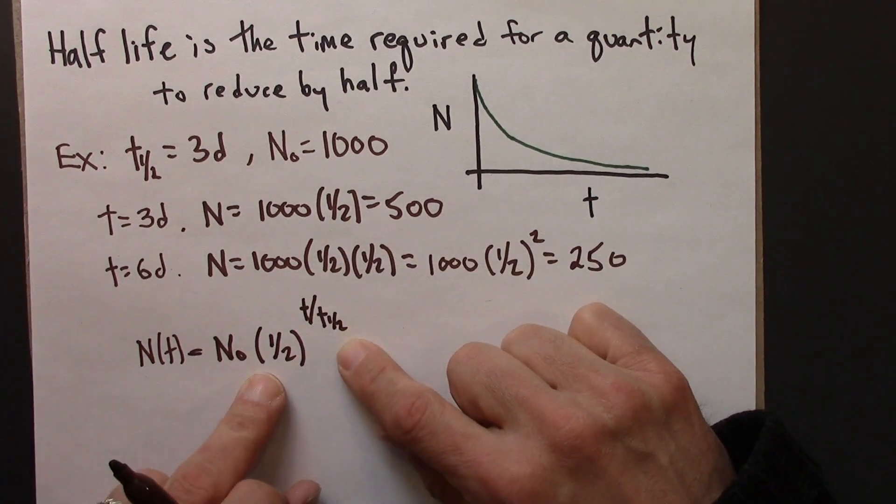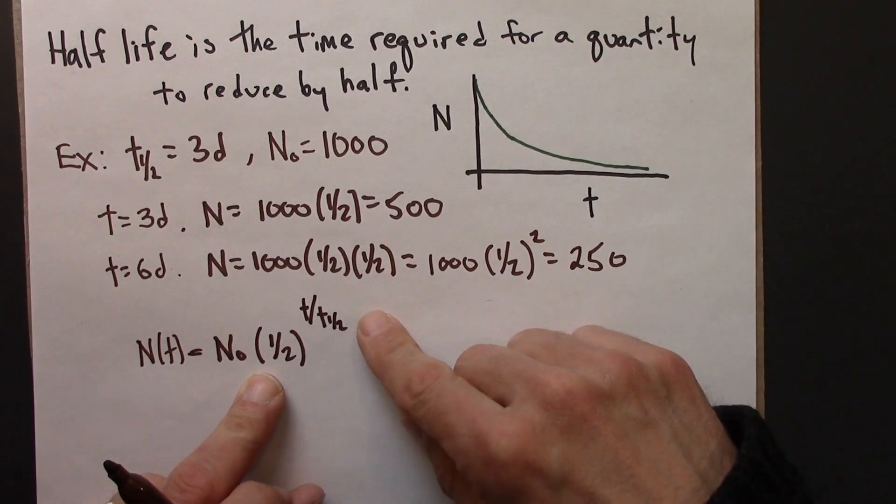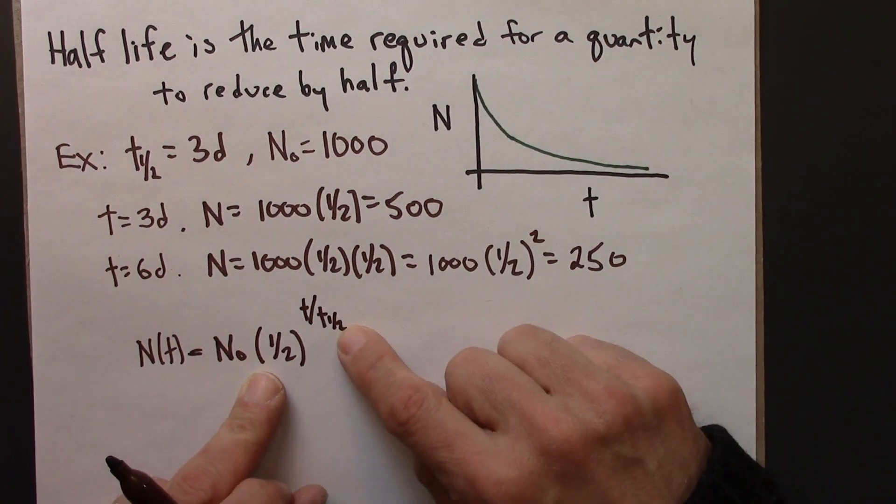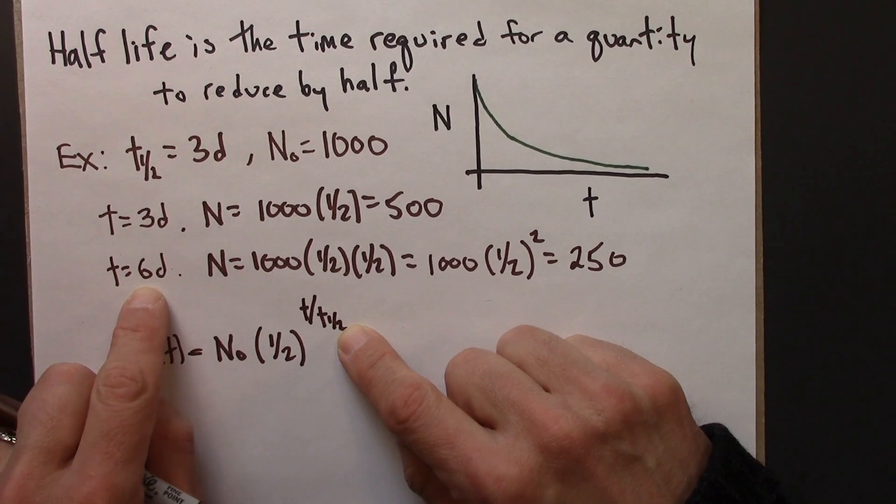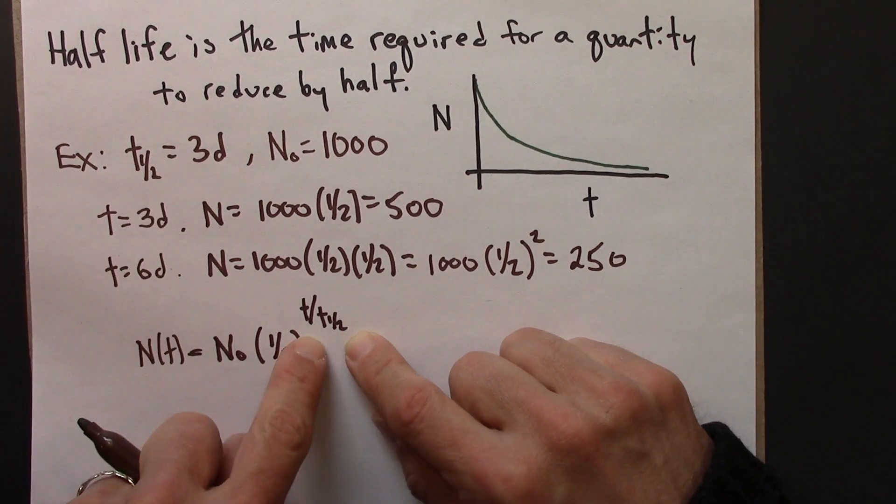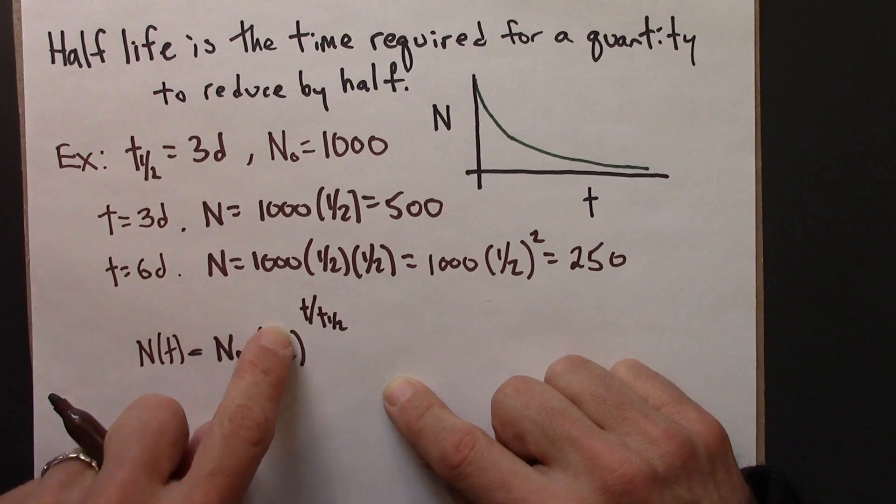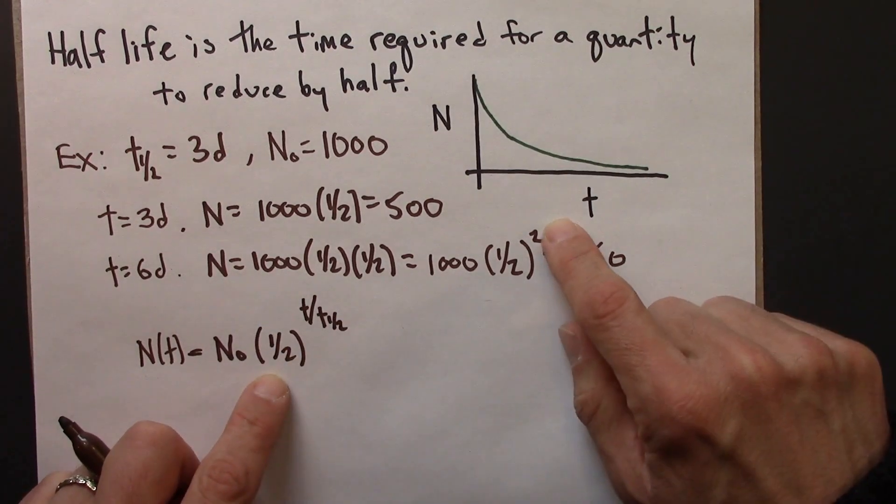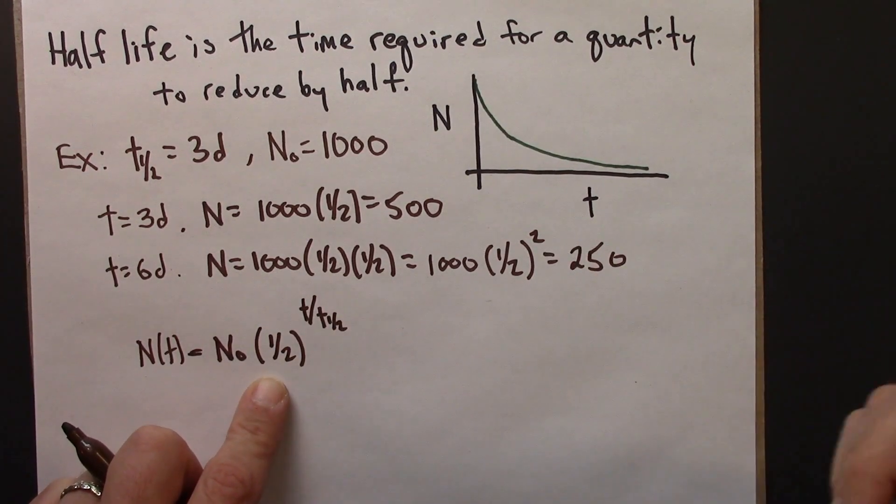So if t is 6, well, 6 divided by 3 is 2. So this quantity here is 2. We have a half-squared, and we get 250. That's just what we did.